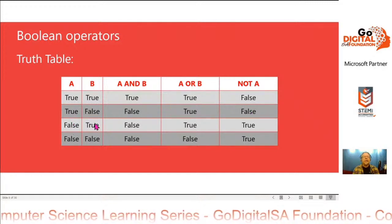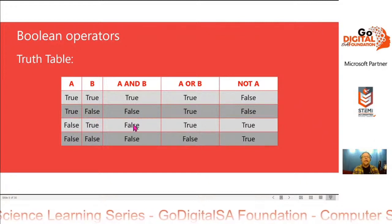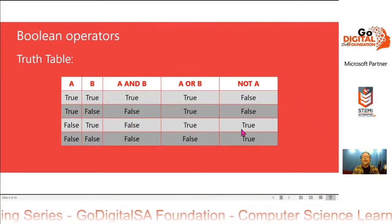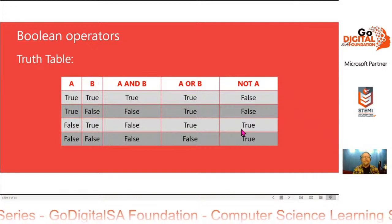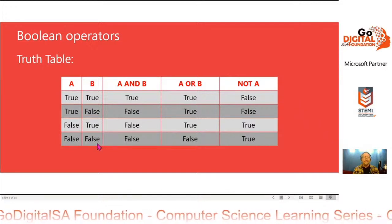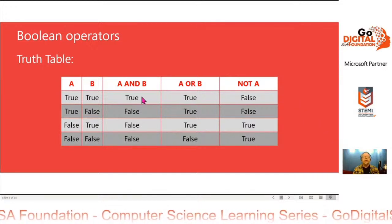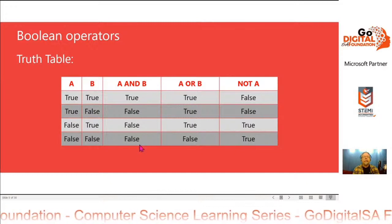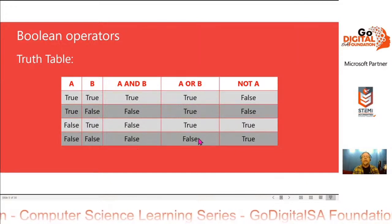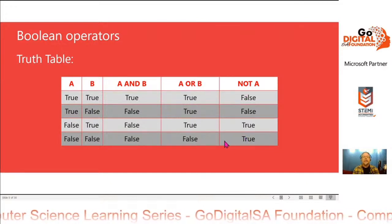If A is false and B is true, then A AND B is false. A OR B is true, and NOT A is true. And if A and B are both false, then A AND B is false, A OR B is false, and NOT A is still true.